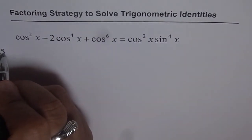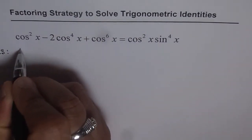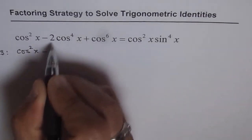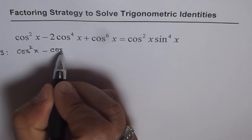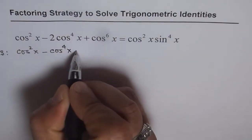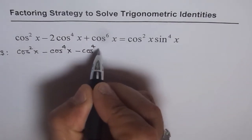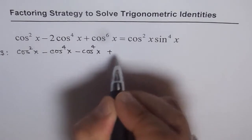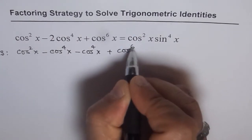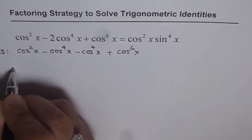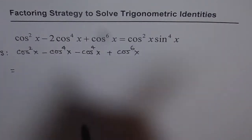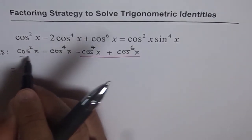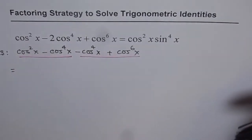Starting with the left side: cos²x - instead of 2cos⁴x, I'll write this as cos⁴x - cos⁴x, and then plus cos⁶x. What we're trying to do here is factor. So we'll factor these two terms and these two terms and see what we get.